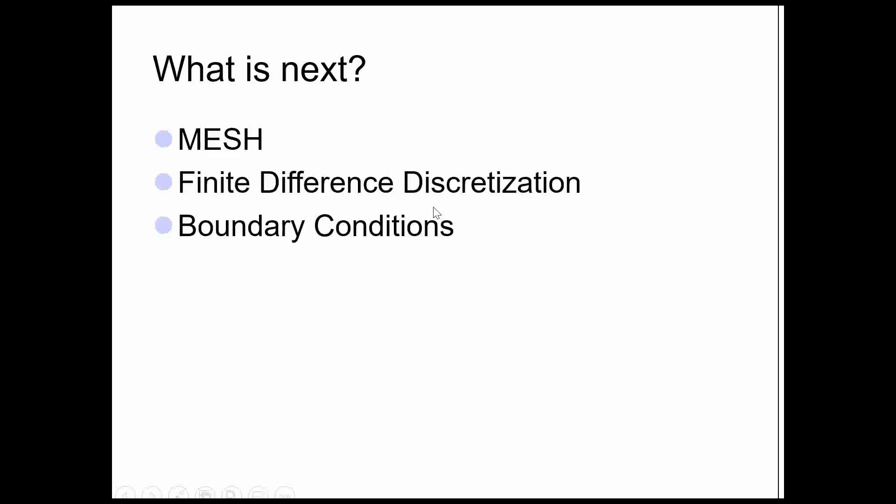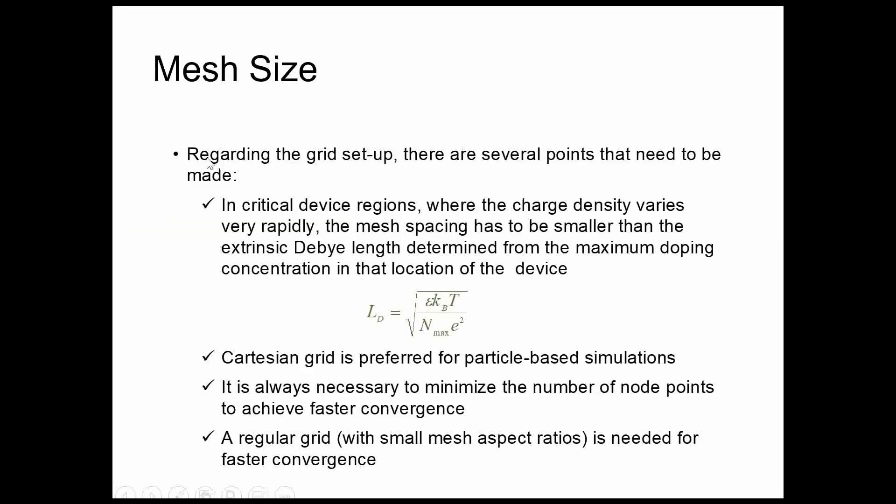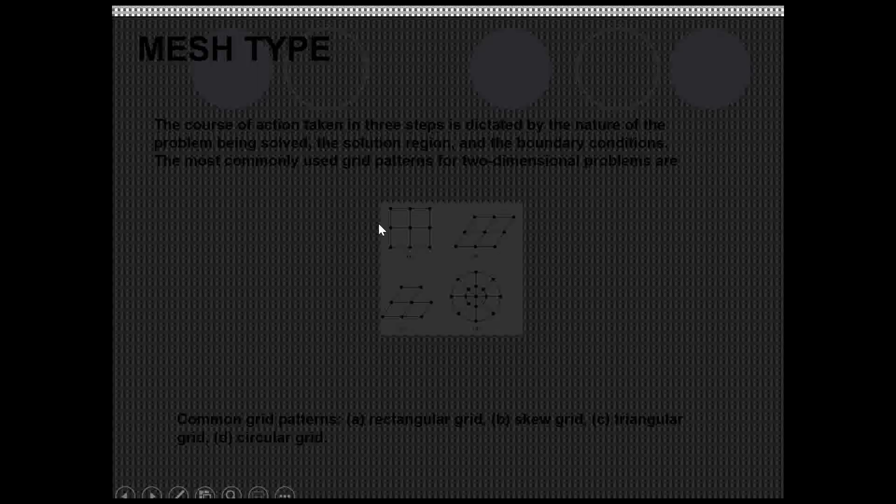What is mesh? Now important thing is mesh. I will just describe mesh. It should be like this in a critical device region where the charge density varies very rapidly. If the charge density varies very rapidly, the mesh spacing has to be smaller than the Debye length. Debye length is something which is related to variation of carrier density at interfaces. Up to what length carrier densities are remaining constant, that's what the Debye length is. Our mesh type should be less than our Debye length. Then this mesh type, again more detail will be discussed in Google Meet sessions.